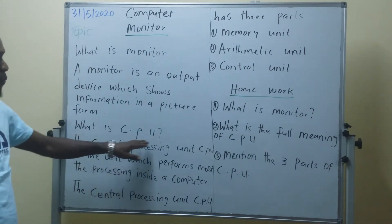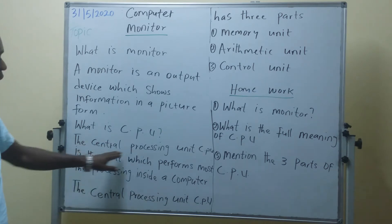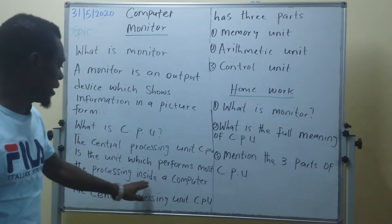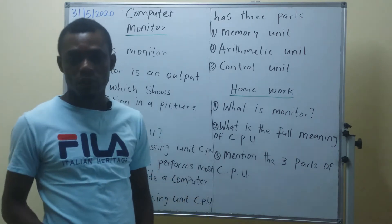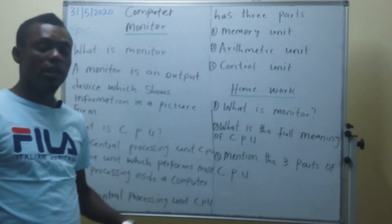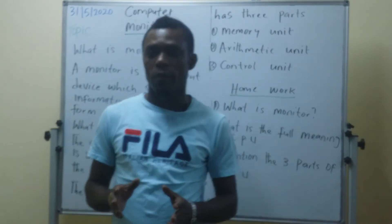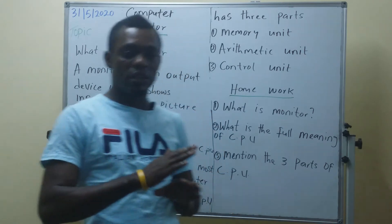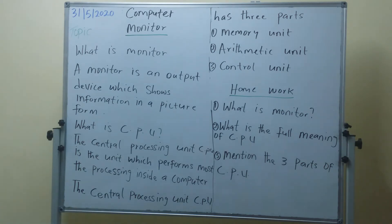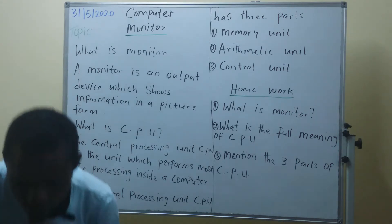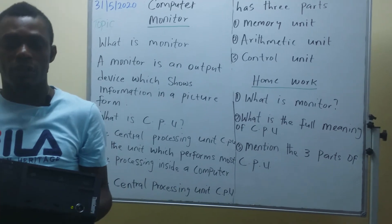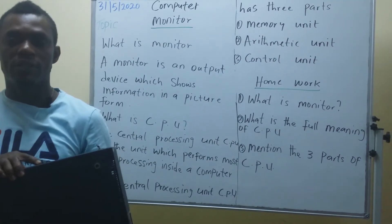Now, what is the central processing unit? The CPU is the unit which performs most of the processing inside a computer. When there is a lot of work to do, it processes all the information. So this is the CPU — this is called the CPU, the central processing unit.